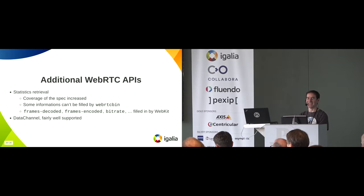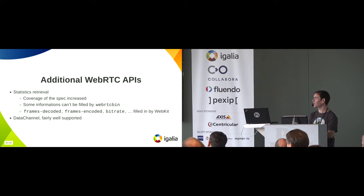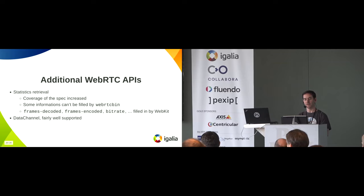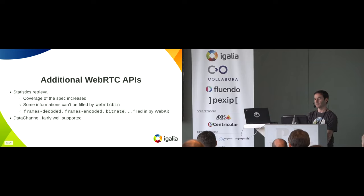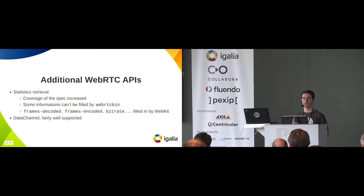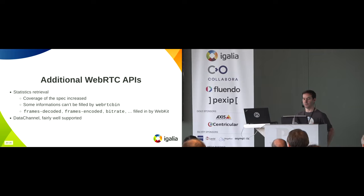In WebRTC there are more things. The stats API — we have to integrate with that as well. Initially the stats API in GST WebRTC was minimal. We sent many requests trying to improve the coverage, but still not all stats can be filled by WebRTCBin because it doesn't take care of encoding or decoding. So we have to fill those ourselves from WebKit. We set up some internal infrastructure for that using custom queries to fill frame decoded, frame encoded, frames dropped, and all these things for incoming and outgoing source stats.